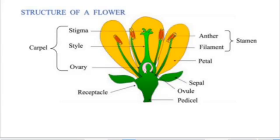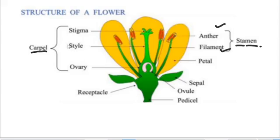Let us now look at the structure of a flower. We have the filament and the anther, which are collectively called the stamens — the male parts of the flower. We also have the carpel or pistil, which are the female parts, consisting of the stigma, the style, and the ovary. You need to be able to identify all these parts.